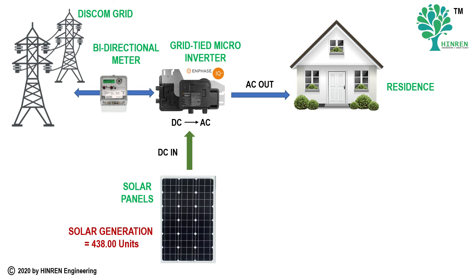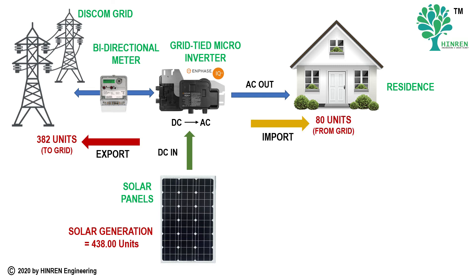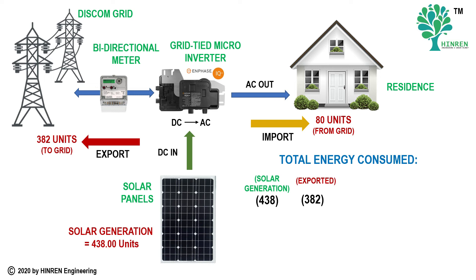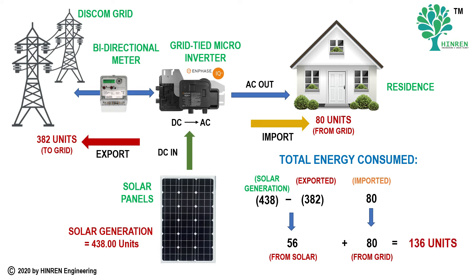Schematically, the total solar generation for that month is 438 units, out of which 382 units were exported to the DISCOM and 80 units were imported from the grid when solar was not available. Out of the 438 units generated, 56 units were consumed by the load directly, plus 80 units were taken from the grid — giving a total load consumption of 136 units of electricity, or 136 kWh.